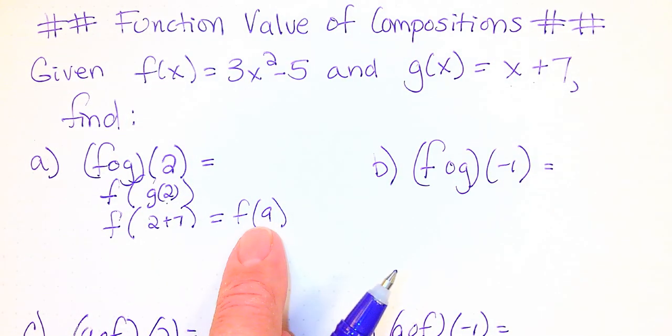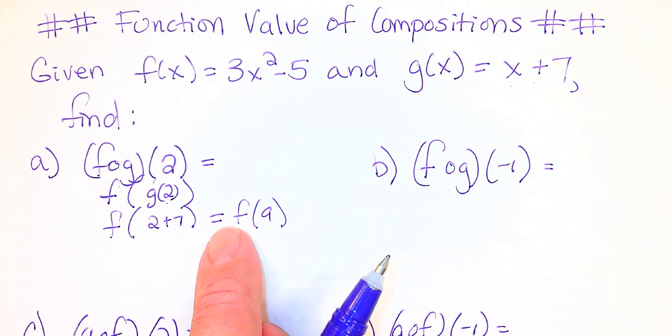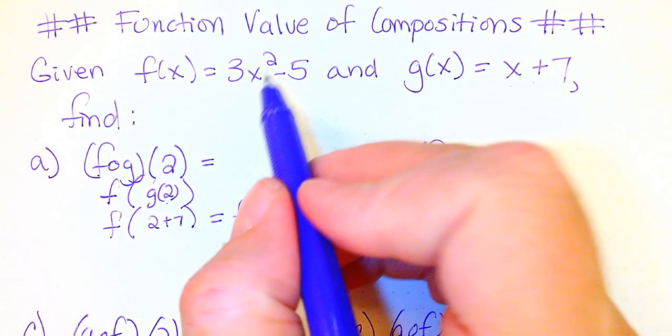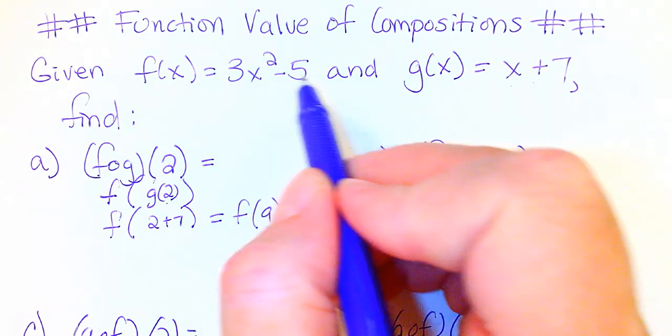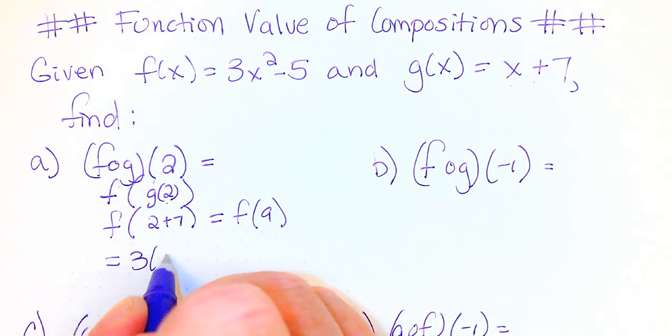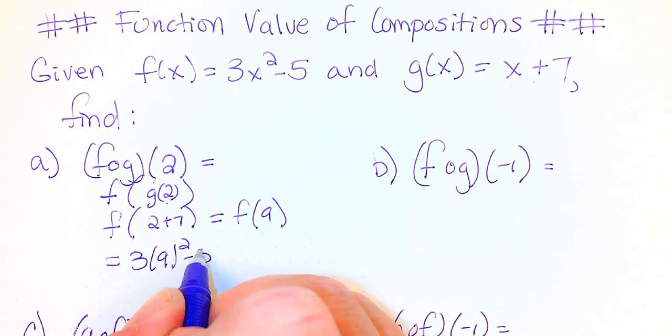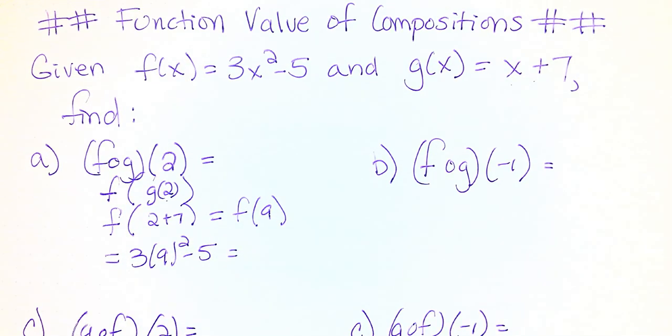Now this is telling us to take that result and substitute it into f. So f is 3x squared minus 5. This is going to be 3 times 9 squared minus 5. So let's see what that will give us. 3 times 9 squared minus 5 is 238. You will get the same result if you were to do f of g of x, find that result and then plug in 2. You should also get 238, but you can actually work this problem either way.